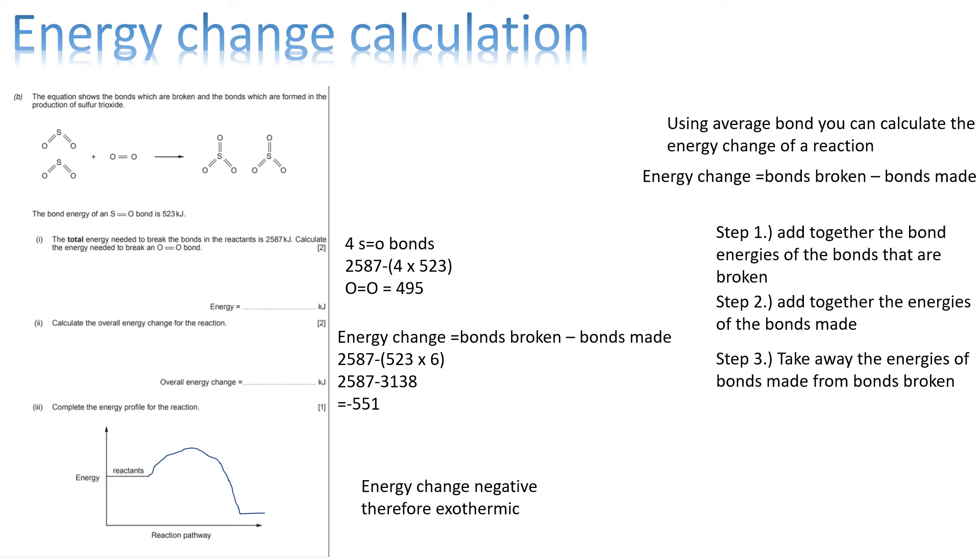If we plug those numbers into the formula, we see energy change equals 2,587, which is the bonds broken, minus 3,138, which is the bonds made. So, this gives us minus 551.